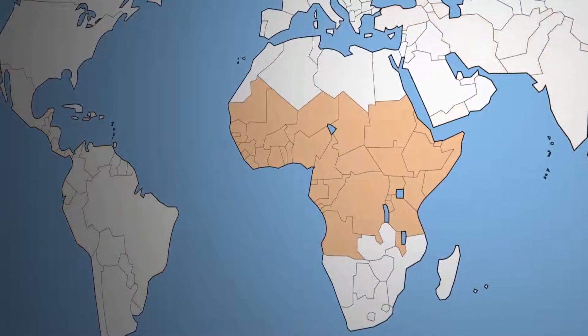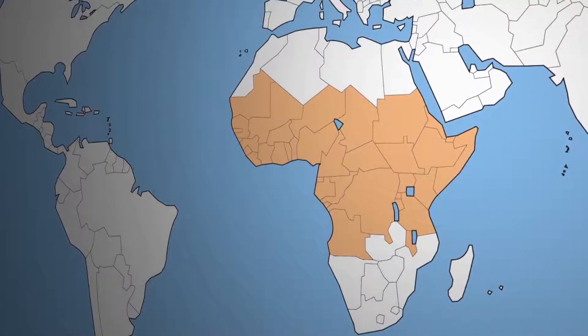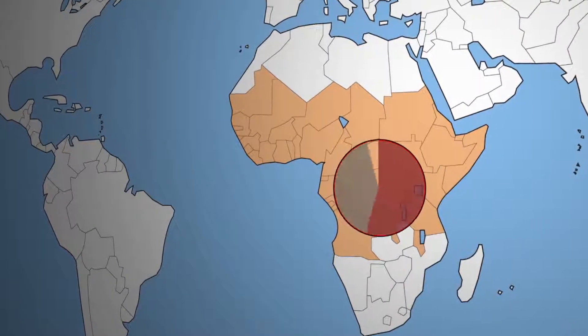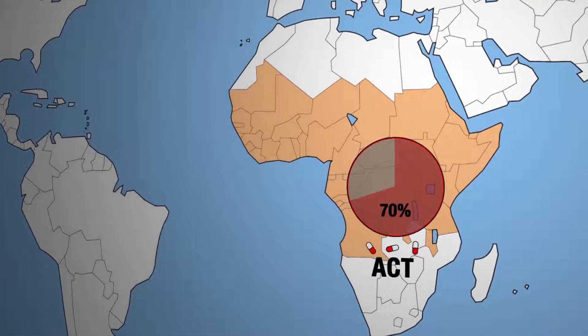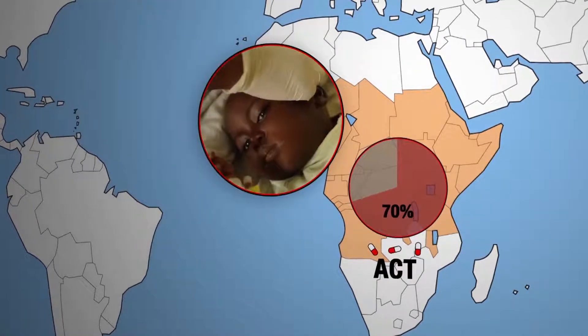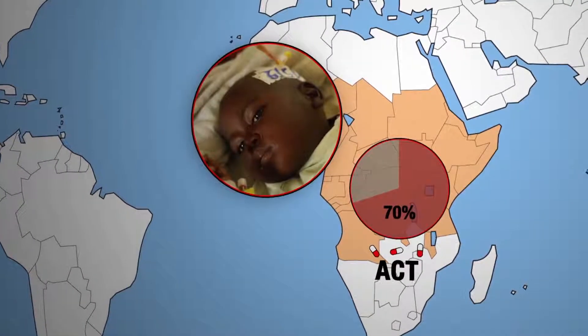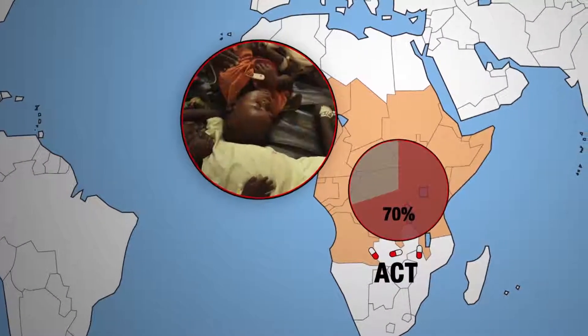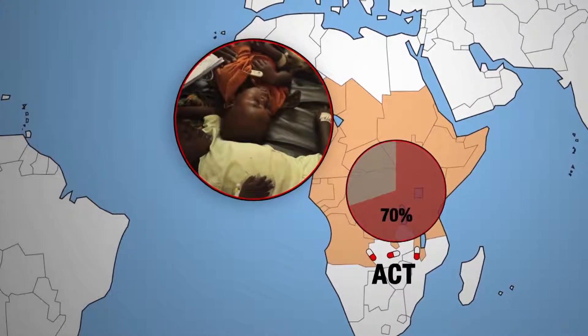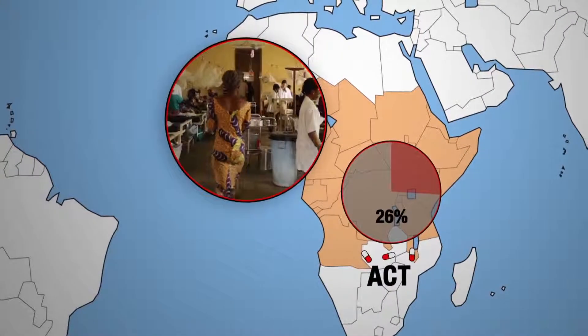Access to health care and screening are a real challenge in combating the disease. In Africa, 70% of patients could be treated with ACT antimalarials distributed in public health facilities. But as most children suffering with a fever never see a doctor, in 2013, only 26% were treated with ACTs.